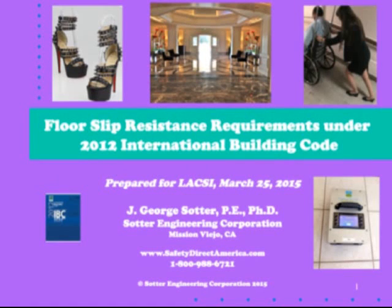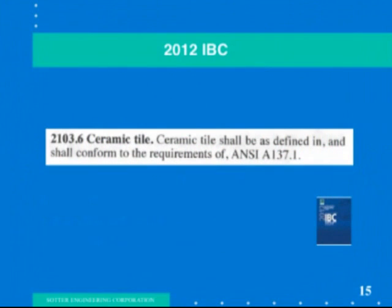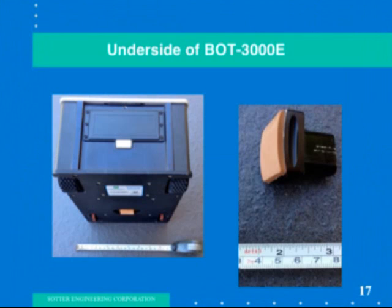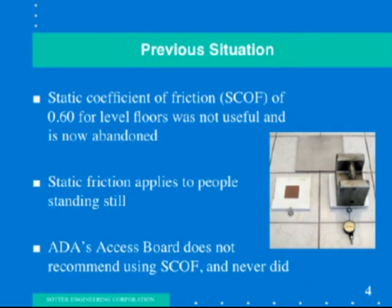The 2012 International Building Code changed the way flooring is tested for slip resistance. Dynamic coefficient of friction testing is now required for ceramic tile using the BOT 3000E and test standard ANSI A137.1 for areas that may get wet in use. Previously, the ASTM C1028 test was used and we were looking for a 0.6 or greater using static COF testing. That test method has been withdrawn by the ASTM because this 0.6 number didn't ever mean much of anything in regards to actual slip resistance, and the ADA never actually recommended using this test method.